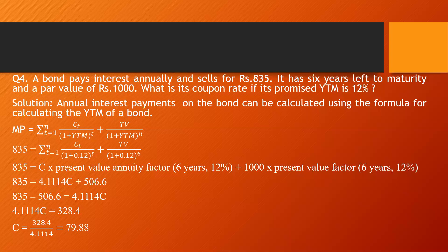We have now calculated all types of bond returns: coupon rate, current yield, spot interest rate, yield to maturity, and yield to call. Moving on, there are mainly two types of bond risk: default risk and interest rate risk. Default risk is the risk of non-payment by the company — there is a chance the company that issued the bonds has gone into loss and is not paying the interest or the principal. To avoid default risk, we can approach credit rating agencies, which rate the creditworthiness of companies.